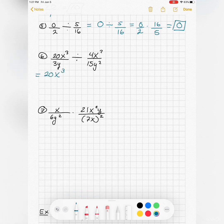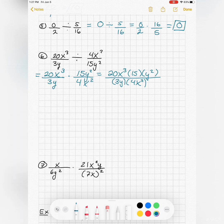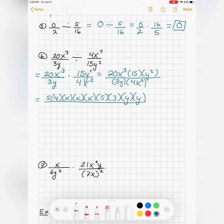And what about some of these ones with variables? First fraction stays the same, second fraction flips. Multiply straight across, and then I'll start breaking things up. So 25 times 4 x cubed, x times x times x, 15, 5 times 3 y squared, y times y.